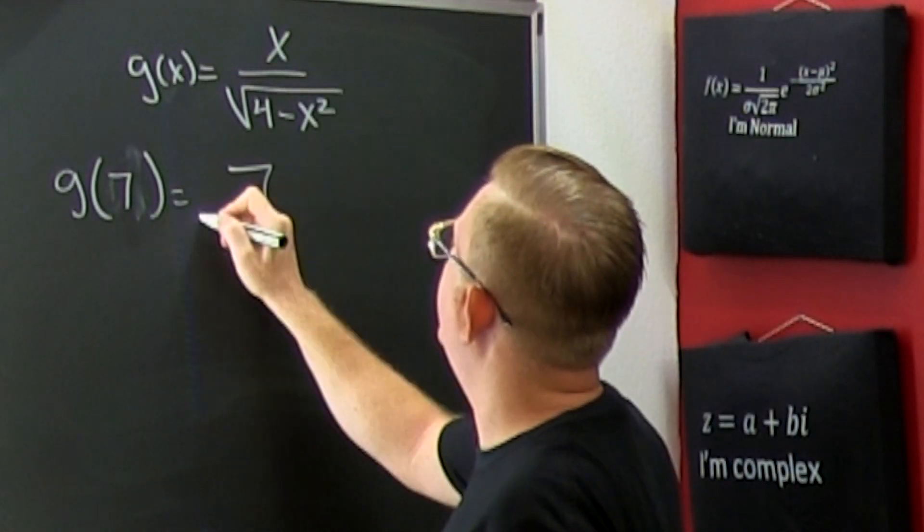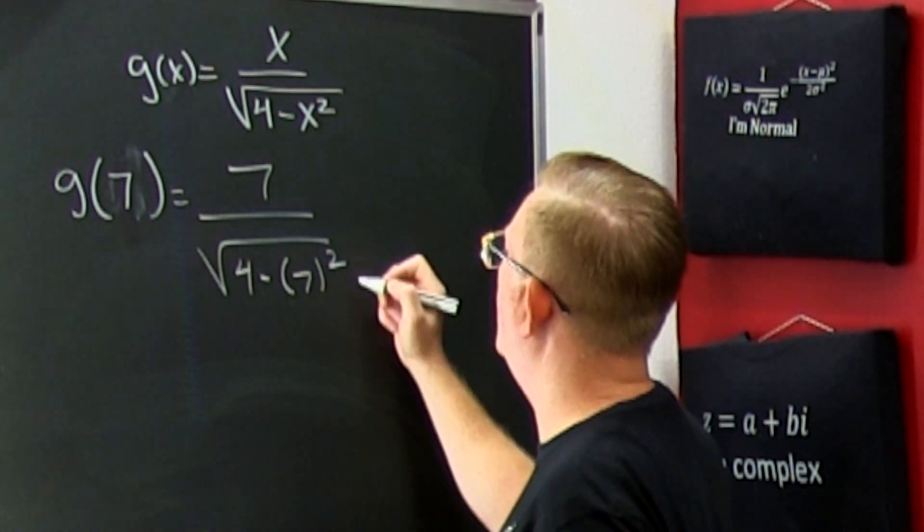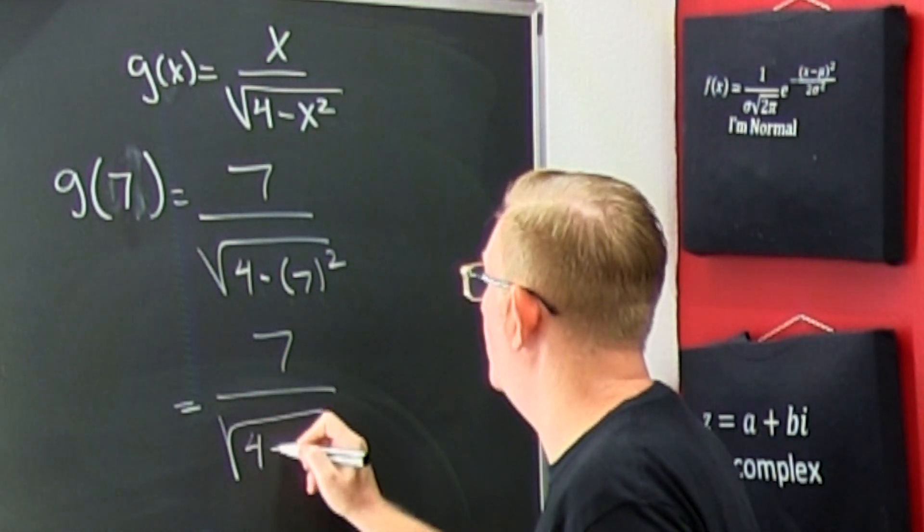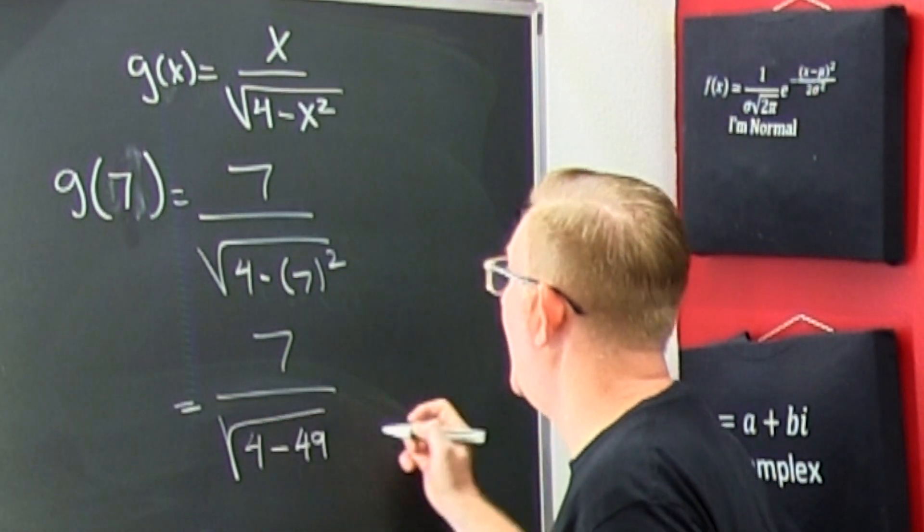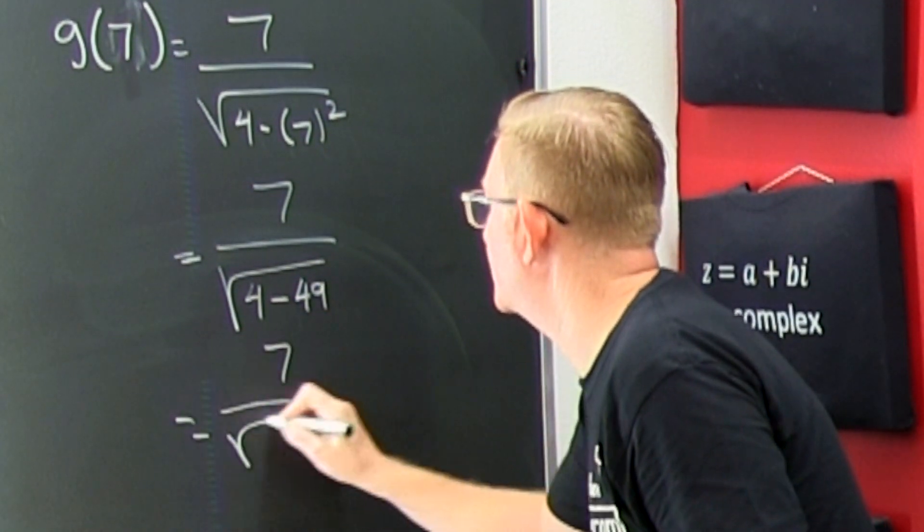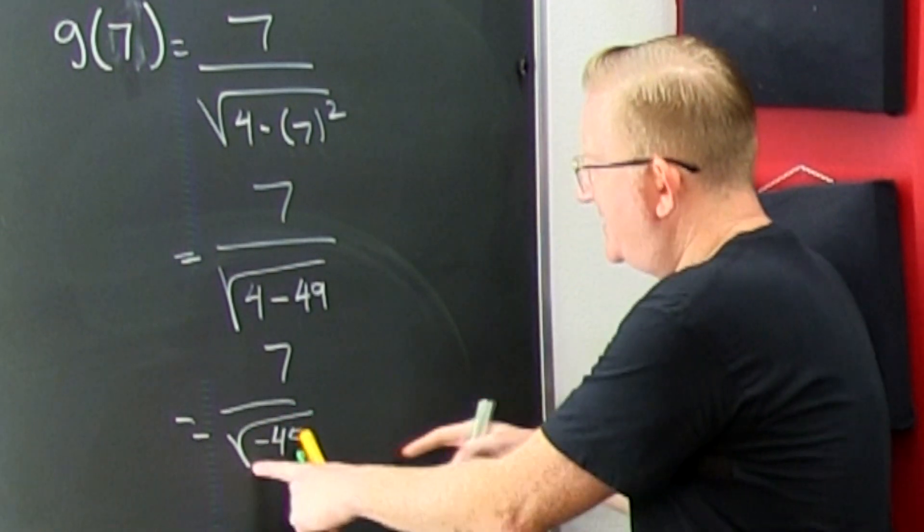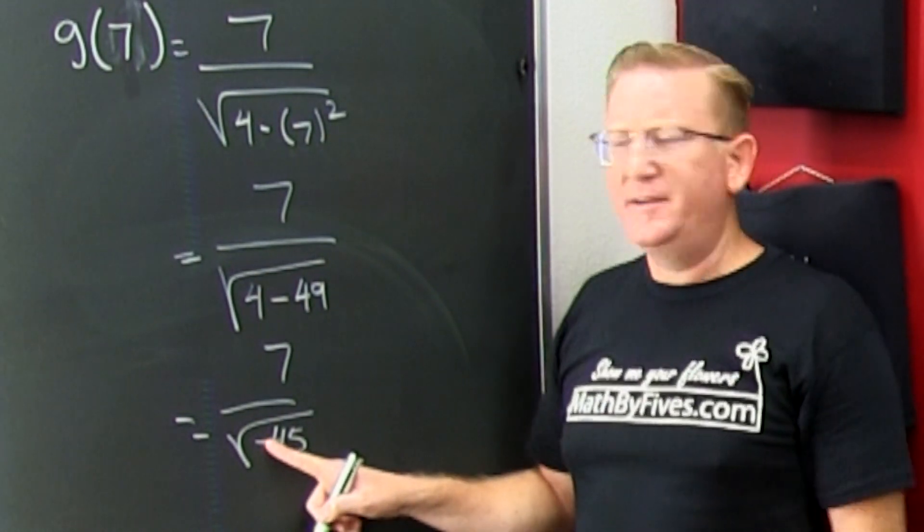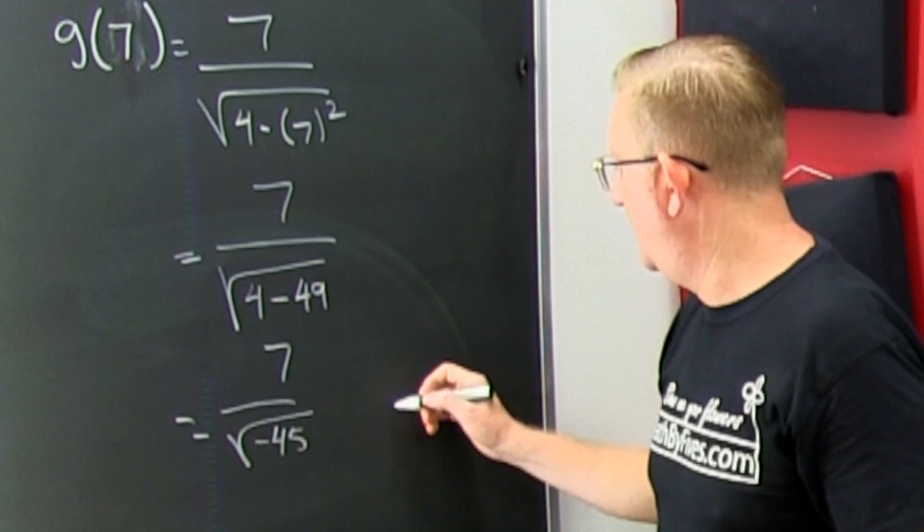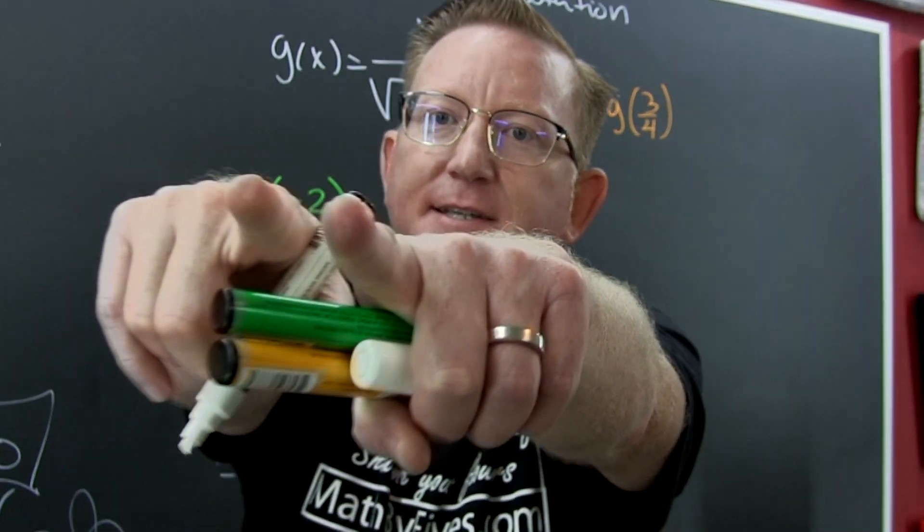Yeah, that's going to be seven divided by the square root of four minus seven squared. Finish him. This is seven over the square root of four minus forty-nine. So then that is seven over the square root of minus forty-five. But what is that? Oh my goodness. That there, that's no real solution. That's imaginary. Like your friends! Let's go!